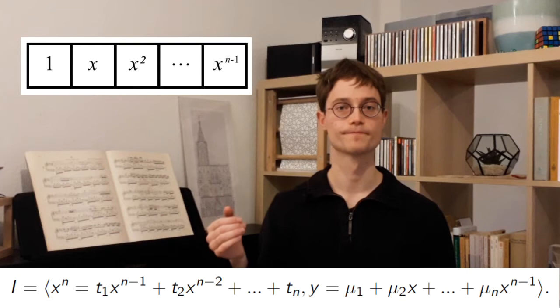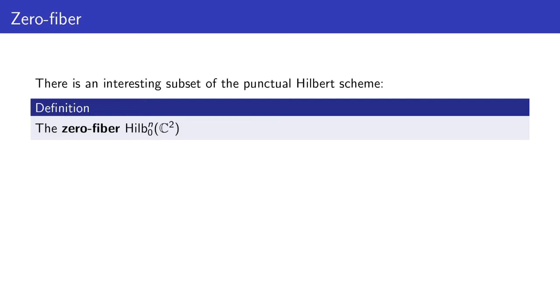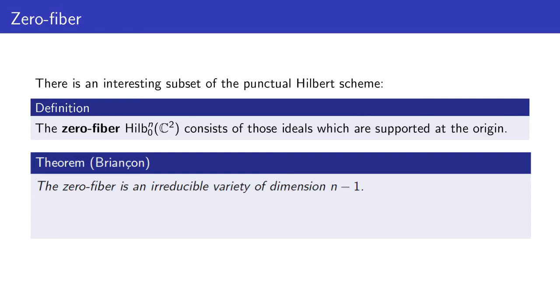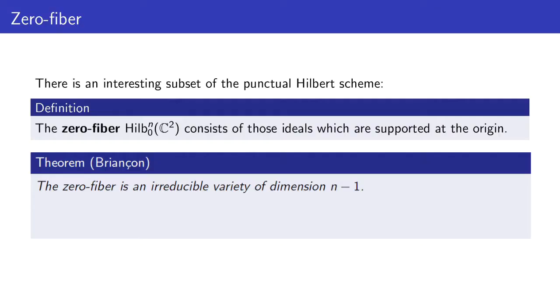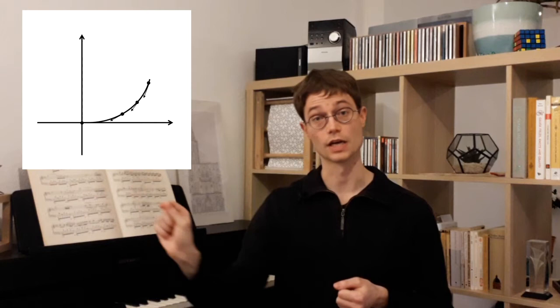There is an interesting subspace of the punctual Hilbert scheme that will play a crucial role in the sequel: the zero fiber. The zero fiber, denoted Hilb^n₀, is the set of ideals which are supported at the origin, meaning that the algebraic variety we see is just the origin. Its structure is given by the following theorem: it is an irreducible variety of dimension n minus 1, which unfortunately is not smooth. But there is an open dense subset which is an affine variety, whose ideals are of the form x^n and y equals some polynomial in x without constant term. A generic ideal in the zero fiber can be seen as the limit of n distinct points of the plane continuously collapsing to the origin, something like a jet of a curve at the origin.